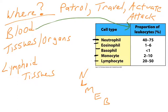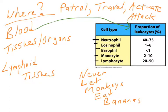A useful mnemonic to recall the abundance of immune cells in the bloodstream is 'never let monkeys eat bananas.' In a normal blood count, neutrophils are the most abundant, followed by lymphocytes, then monocytes, then eosinophils and basophils. Clinically, elevated lymphocyte levels might indicate a viral infection, while abnormally high eosinophil levels might signify another type of immune system disorder. This has been a basic introduction to immune cells, and we'll go into great detail on each throughout the course.